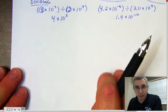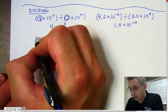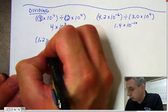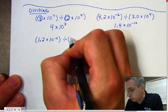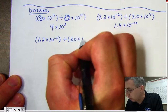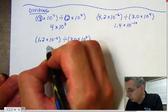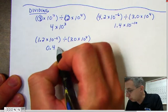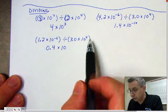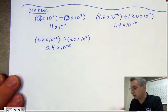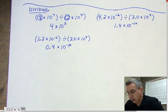Now I'd like to work out another example with you. We're going to have 1.2 times 10 to the negative 6 divided by 3.0 times 10 to the 4th. When you divide 1.2 divided by 3, you get 0.4 times 10. And then negative 6 minus 4 gives you negative 10. So it's 0.4 times 10 to the negative 10th.